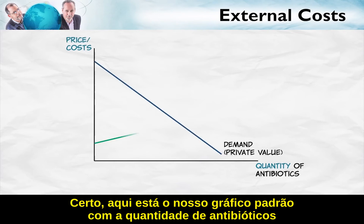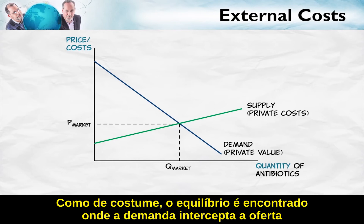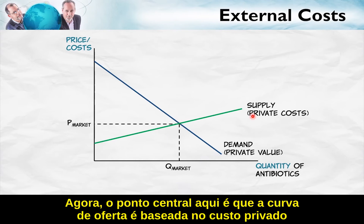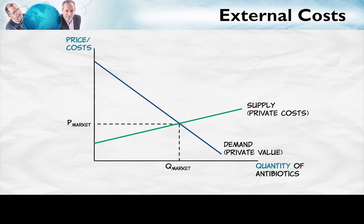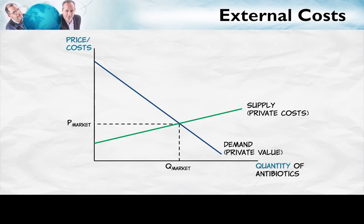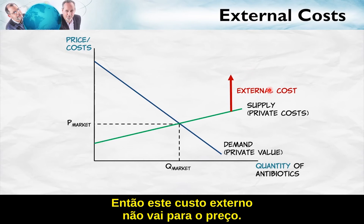Here's our standard diagram with the quantity of antibiotics on the horizontal axis and prices and costs on the vertical axis. As usual, the equilibrium is found where demand intersects supply, or where quantity demanded equals quantity supplied. The key point is that the supply curve is based on private costs — basically the cost of producing the antibiotic. But every time an antibiotic is produced and consumed, there's a cost of bacterial resistance, a cost borne by all of us, by bystanders. That external cost is not taken into account by the suppliers, so it doesn't go into the price.